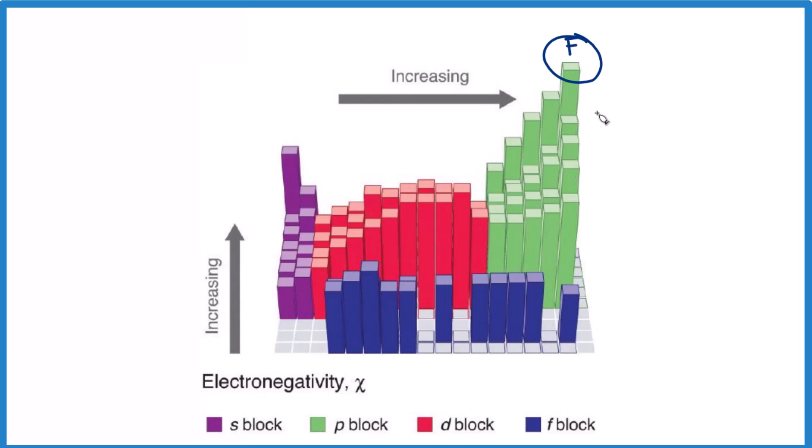So again, remember fluorine is the most electronegative, and you can kind of see the trend. And it is a trend. It's not perfect. Some of the transition metals don't quite follow the trend. Overall, they do. And again, hydrogen over here. Hydrogen has quite a bit of electronegativity compared to the other group one elements.